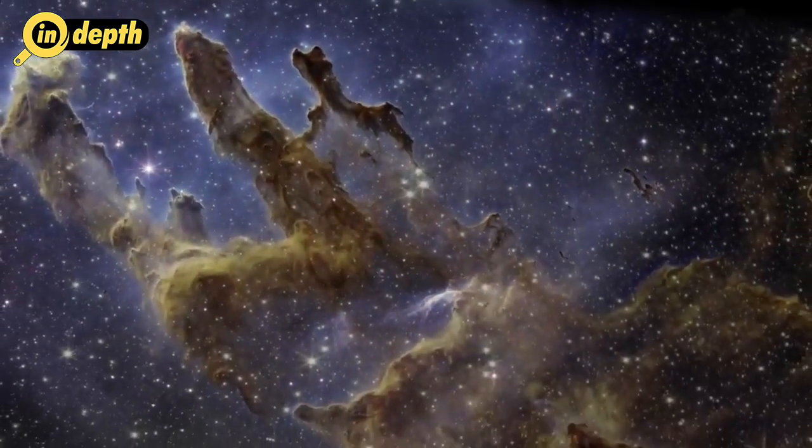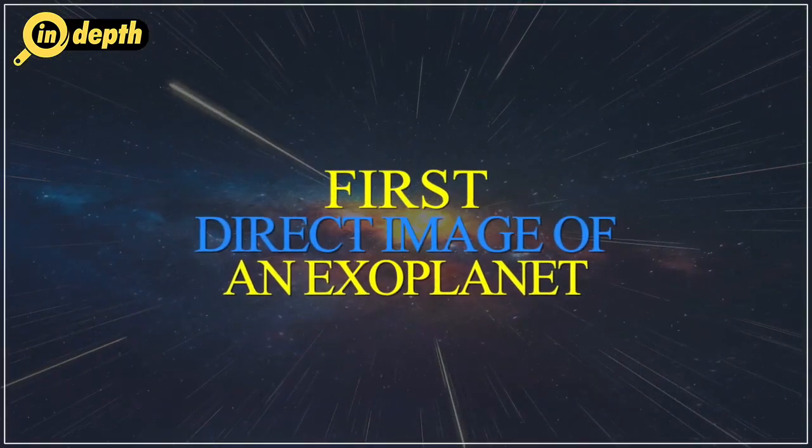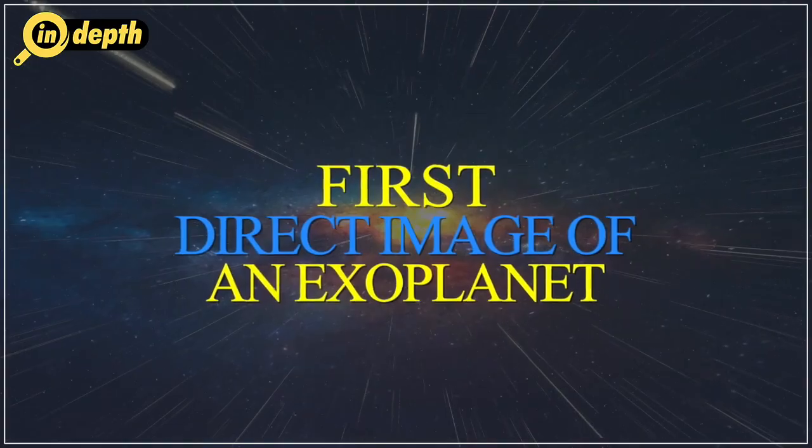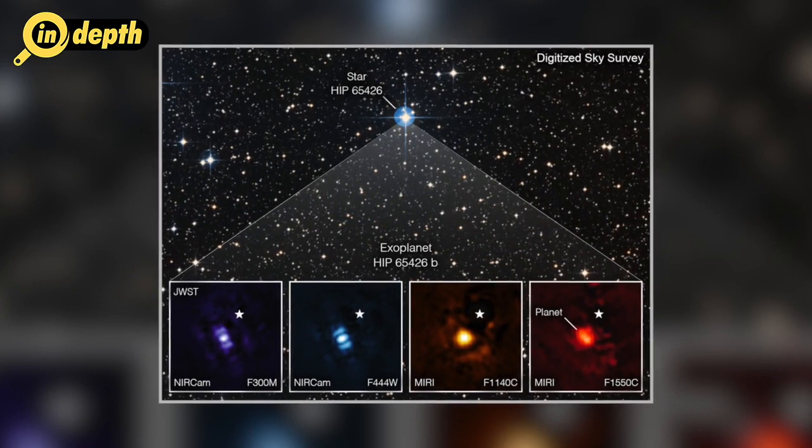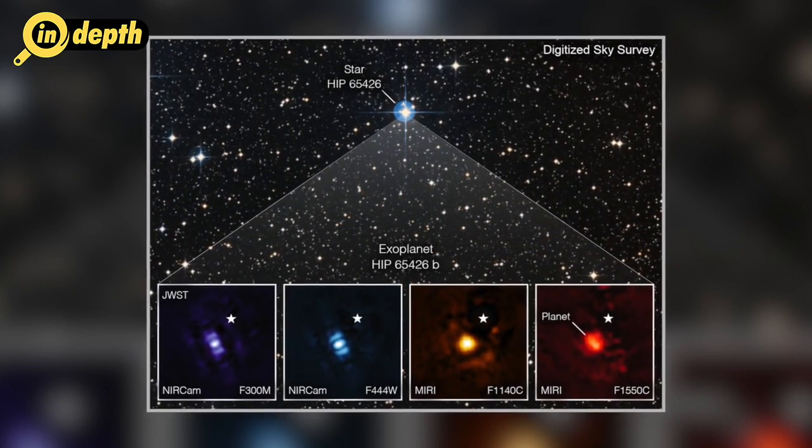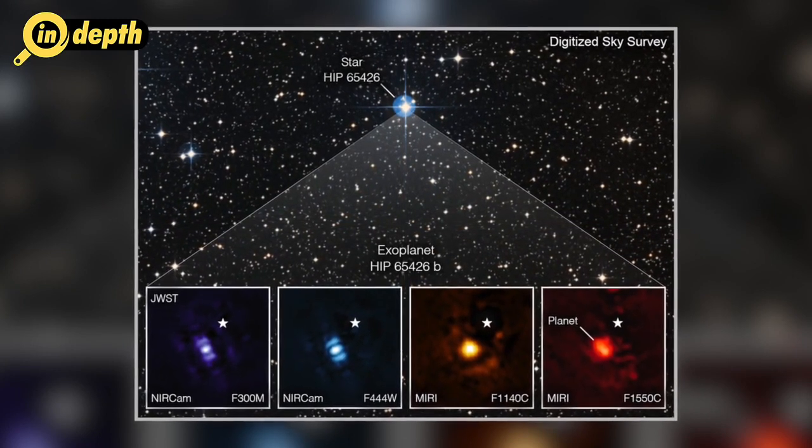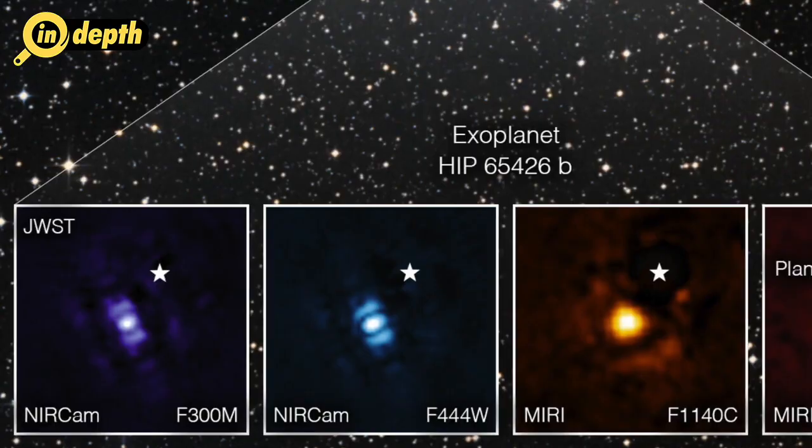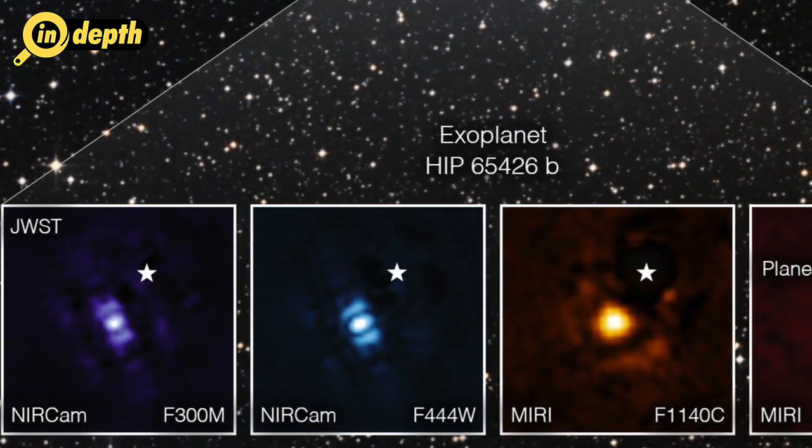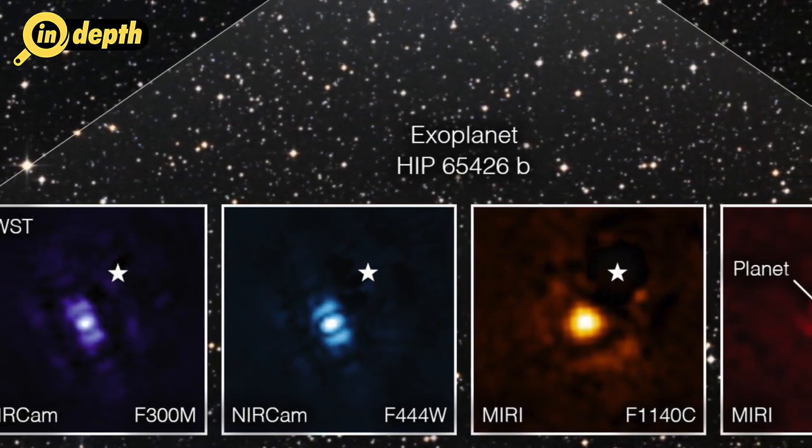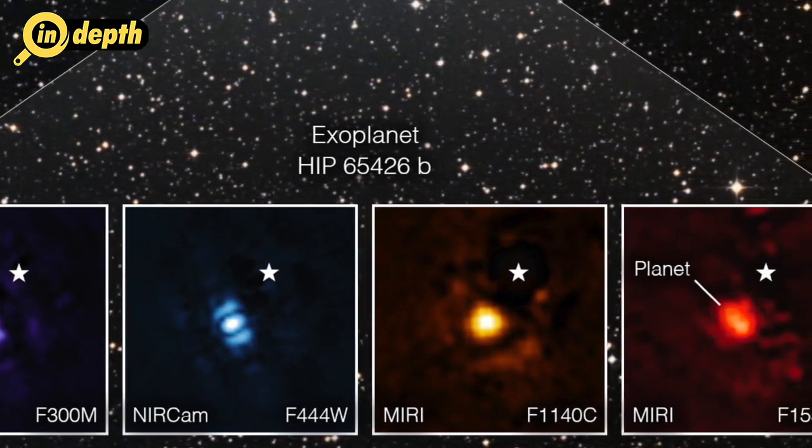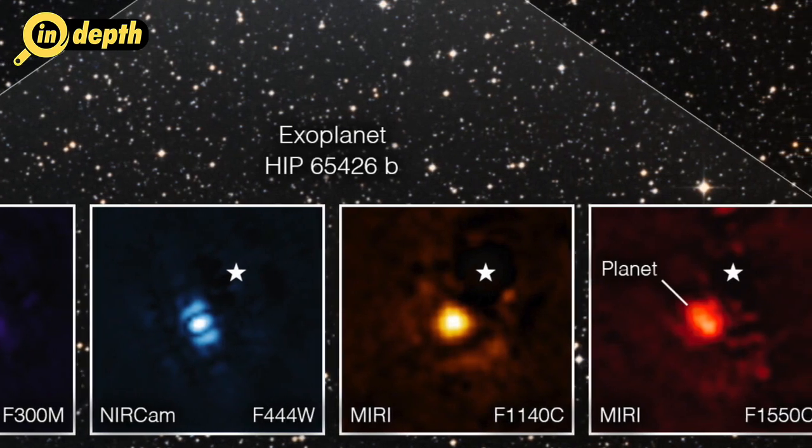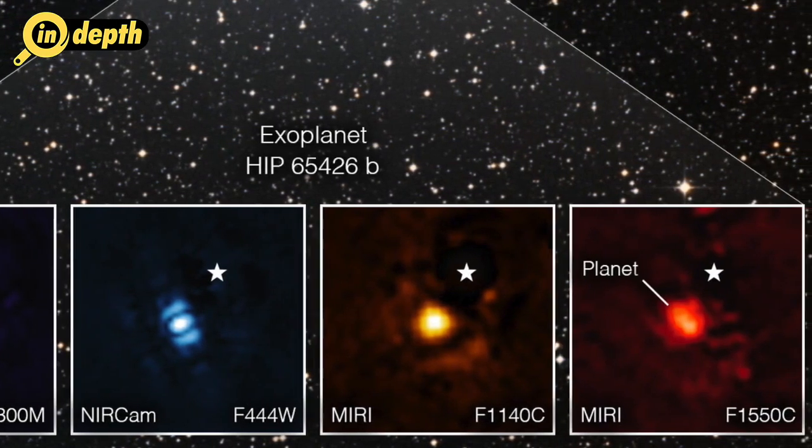First Direct Image of an Exoplanet. After the discovery of exoplanets in 1995, astronomers have been trying to capture more and more of such so-called living planets for any extraterrestrial life. But most of the exoplanets are so far from Earth that the technology we had could only allow astronomers to detect the exoplanets through a dip in the light of the star they are orbiting, when that planet passes in front of its host star.